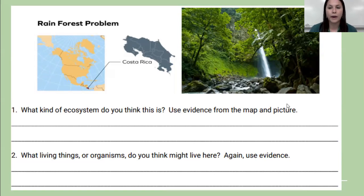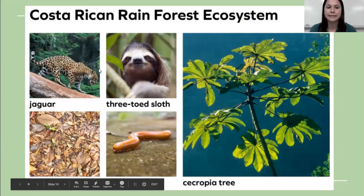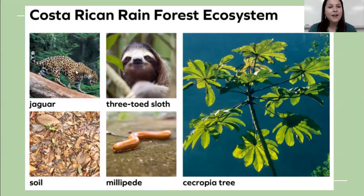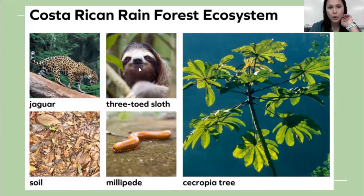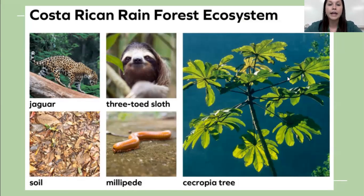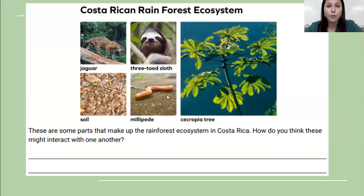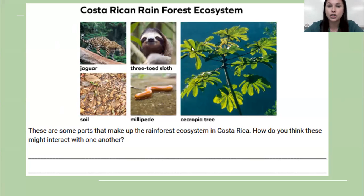We are going to focus on these organisms. We see a jaguar — go Jags — they live in rainforests. A three-toed sloth, which is a very slow animal. This millipede here in the soil. Remember that all living things, all organisms, are included in an ecosystem — even this cecropia tree. Even though it's not an animal, the cecropia tree is a living thing and part of this ecosystem. These are just some of the parts that make up the rainforest ecosystem in Costa Rica. How do you think these things might interact with each other? Pause the video and jot down some notes.